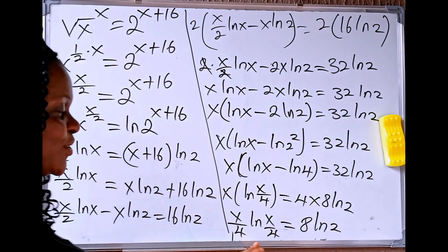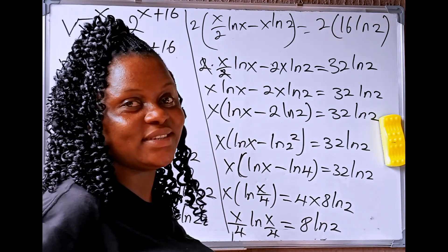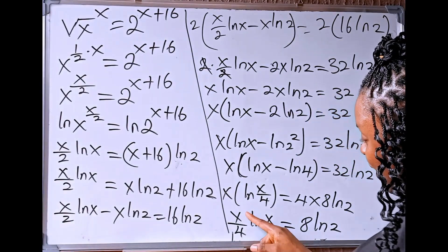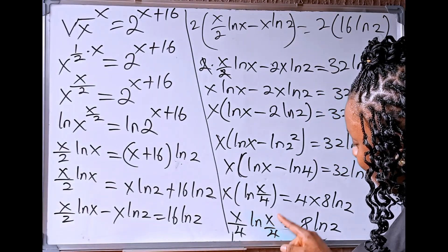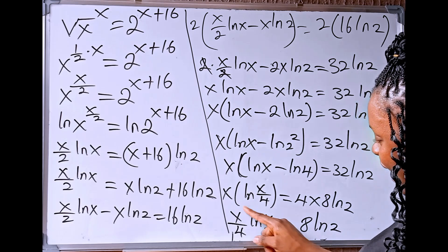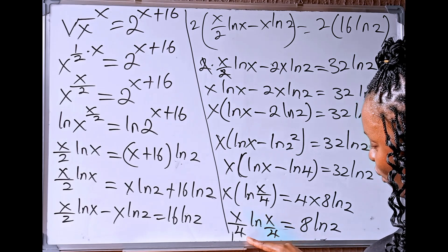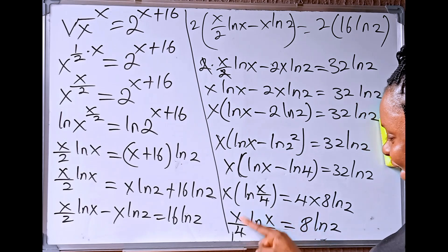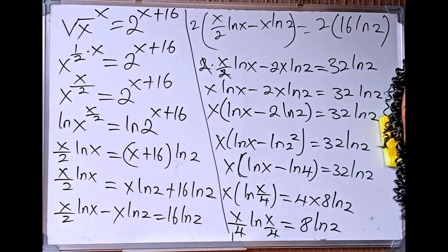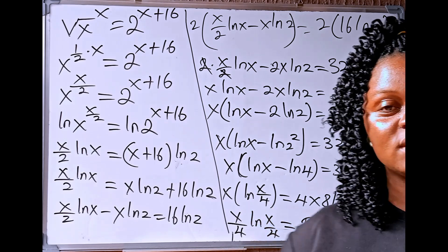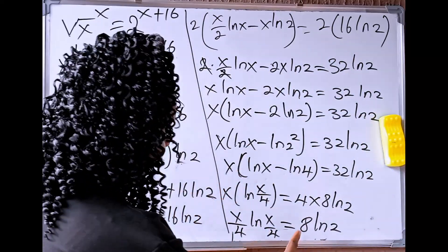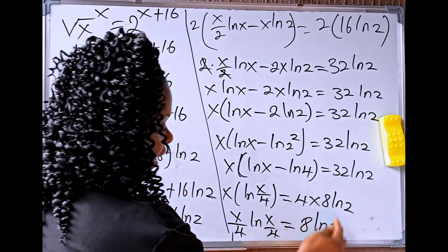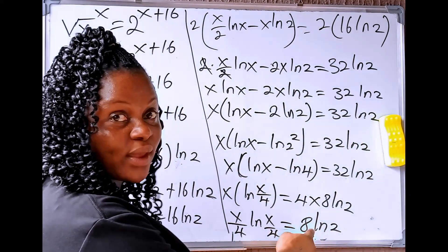Does this look interesting? Yes! Because looking at this, you can see that what is here is what is here — x divided by 4 and ln of x divided by 4, they are the same. So our major target now is to try and make the same thing applicable on the right-hand side.